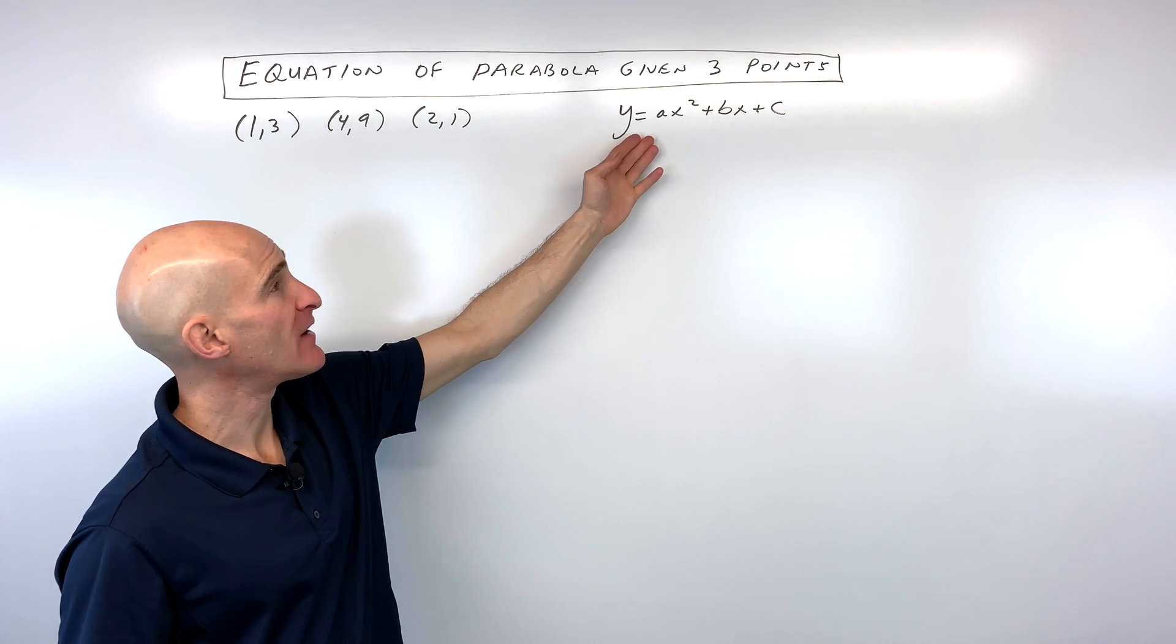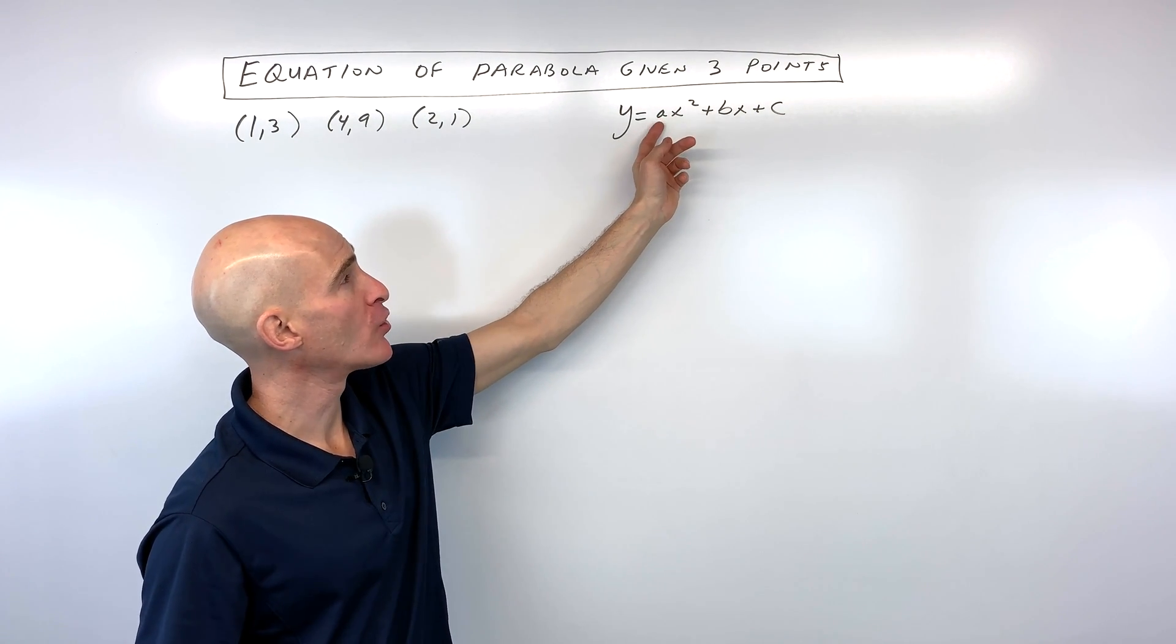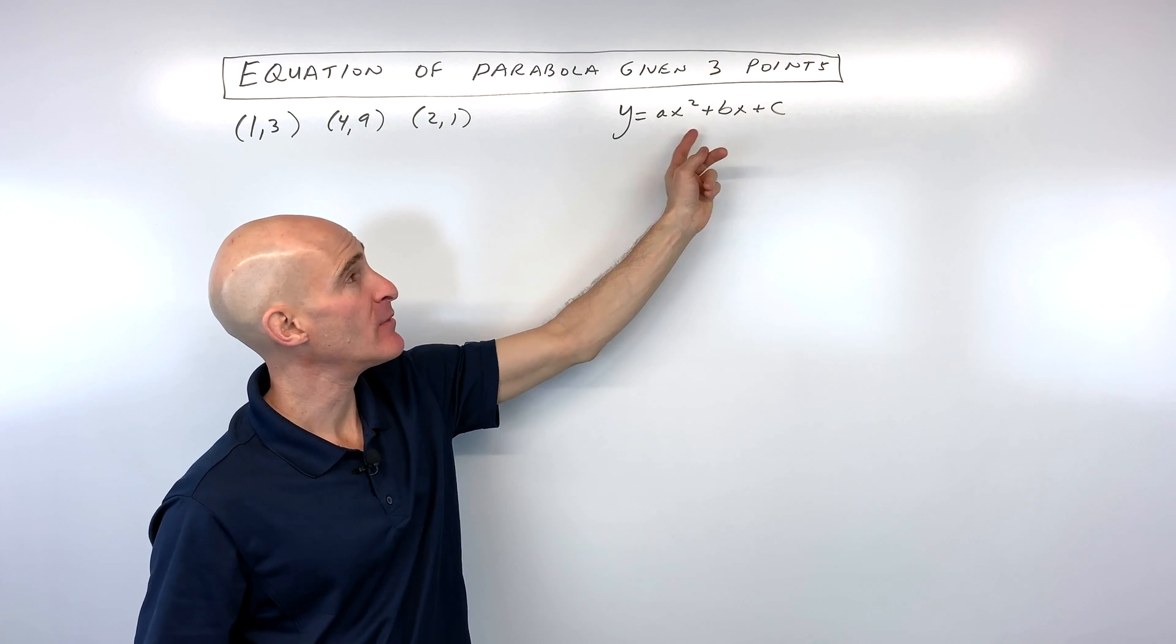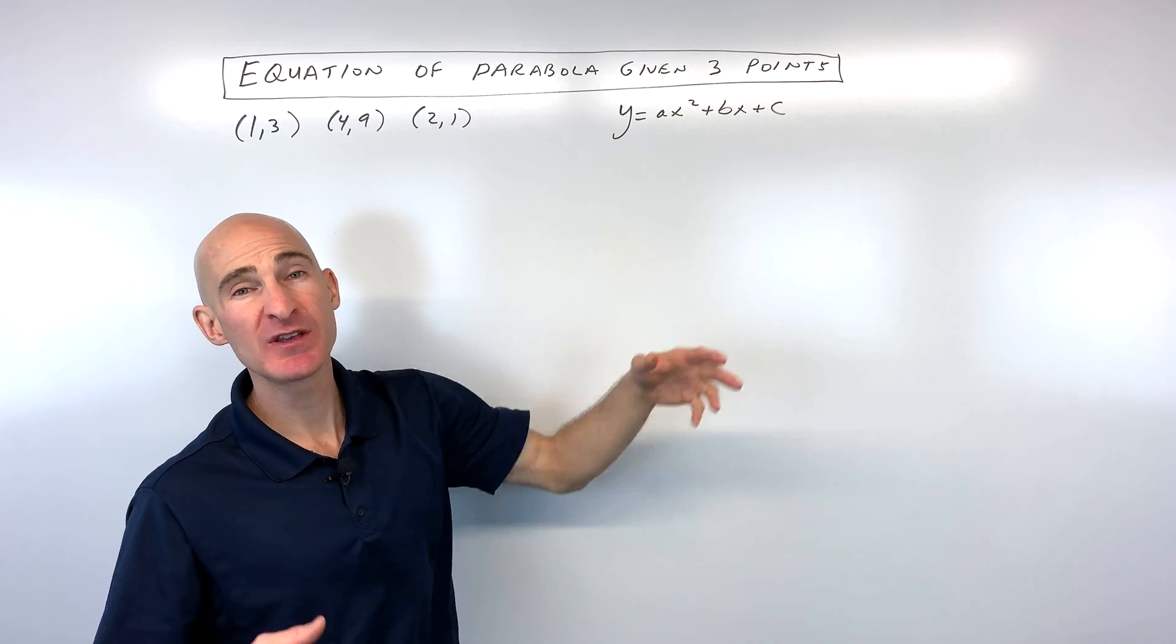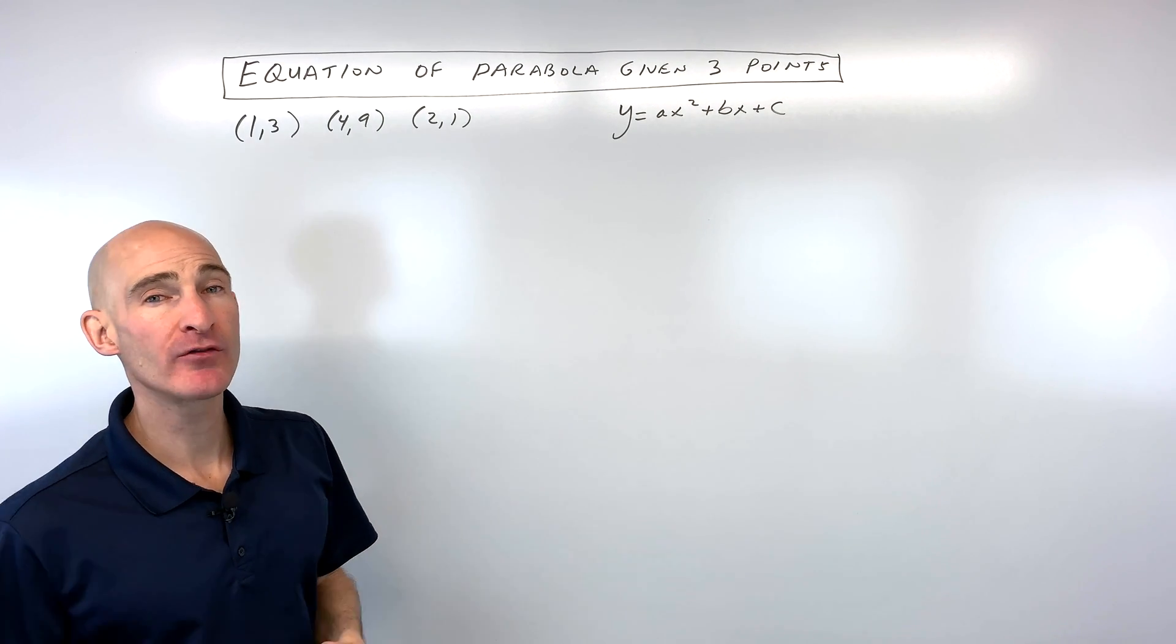So the first thing we need to do is we need to find out what are the coefficients a, b, and c. And because we have three unknowns, that means we need three equations to solve for those three variables.